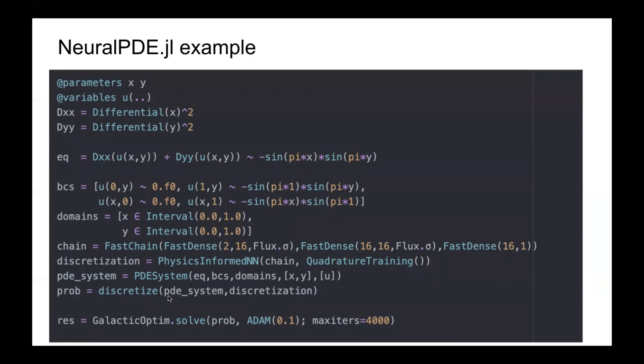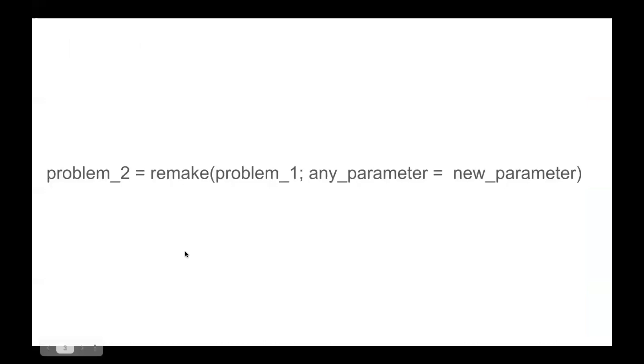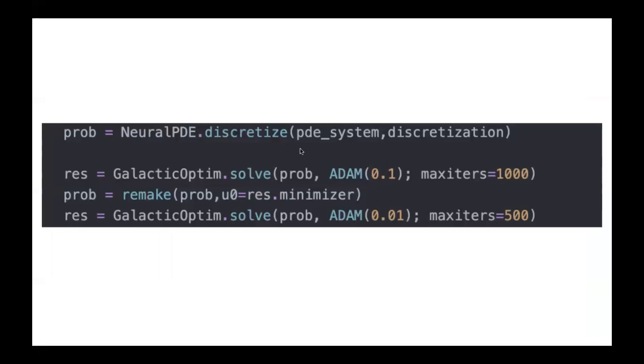If we're going to continue the training but want to change some of the parameters of the problem, we can use remake methods that allow to change any parameter in the problem like domain or optimizer. A simple example is changing the learning rate in ADAM optimizer.